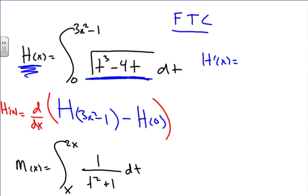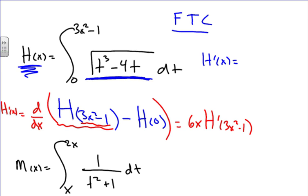When we take the derivative of h composed of 3x squared minus 1, this is a composite function, so we use the chain rule. We get h prime of (3x squared minus 1) times the derivative of the inside, which gives us 6x. Then the derivative of negative h of 0 — since h of 0 is a constant — equals 0.